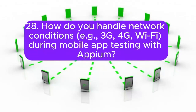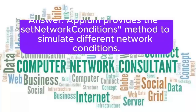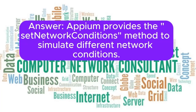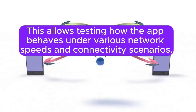28. How do you handle network conditions, for example 3G, 4G, Wi-Fi, during mobile app testing with Appium? Appium provides the set-network-conditions method to simulate different network conditions. This allows testing how the app behaves under various network speeds and connectivity scenarios.